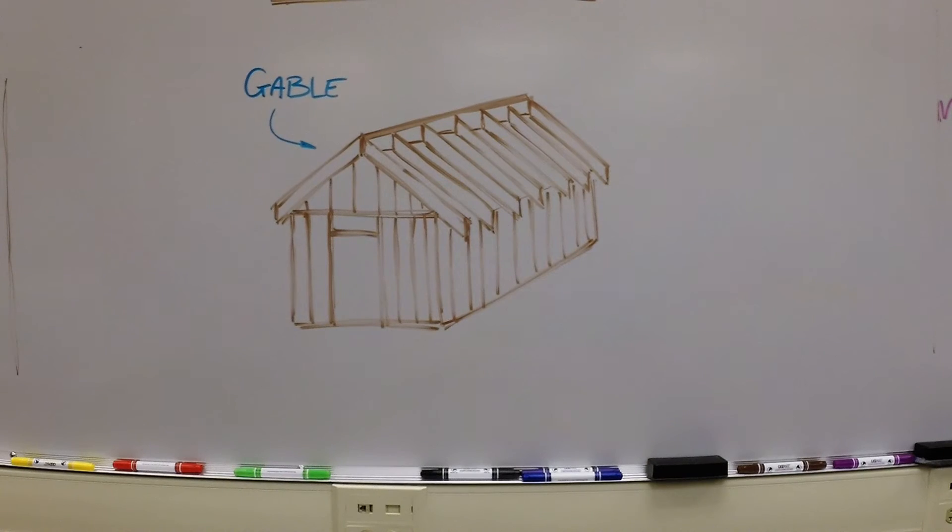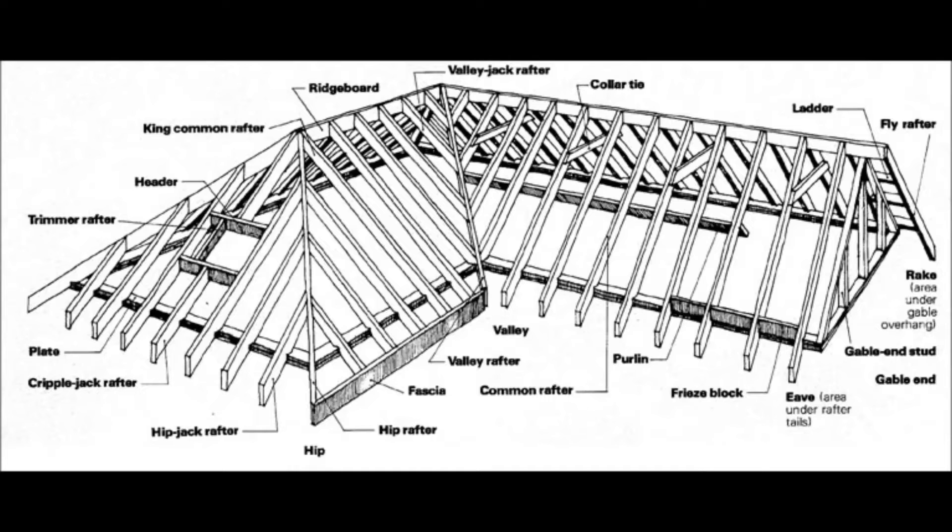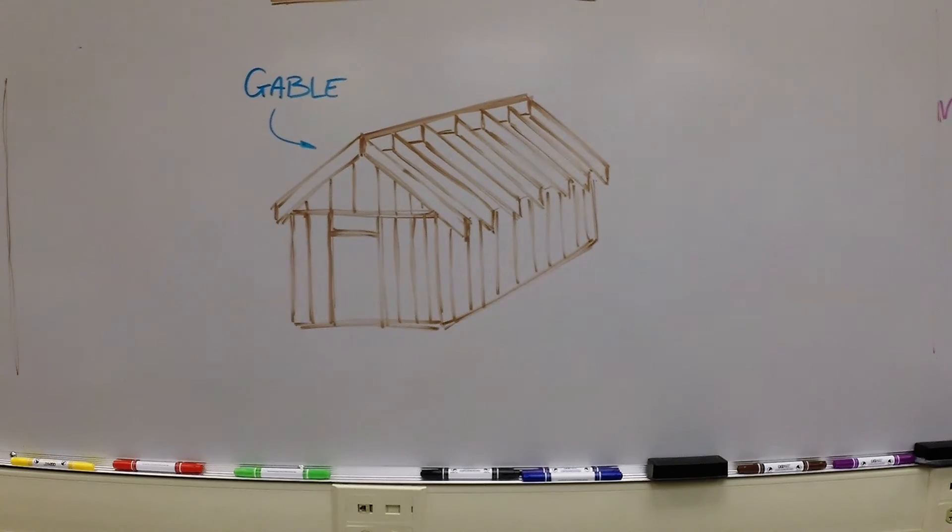Gable roofs are one of the simplest types of roof construction, involving only one type of rafter. More complicated roof styles like hip or valley roofs require you to lay out and cut more complicated pieces. For this example, I'll be showing you a common rafter for a small shed with a gable roof.